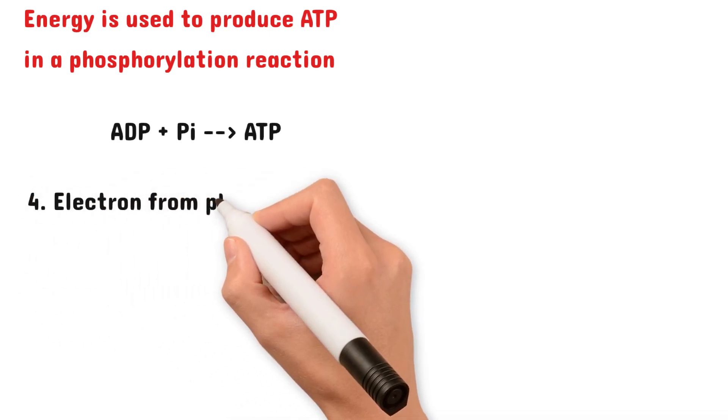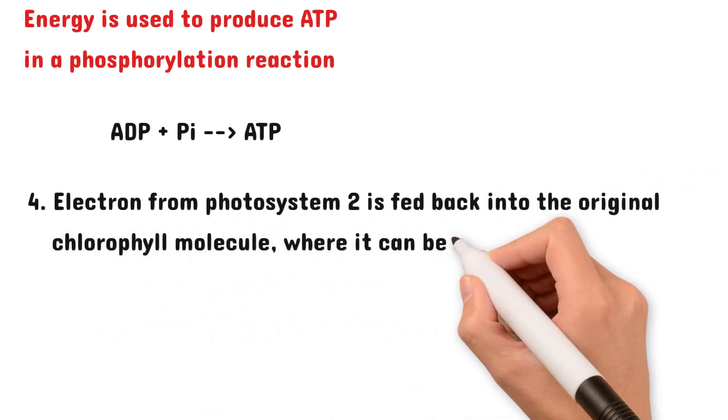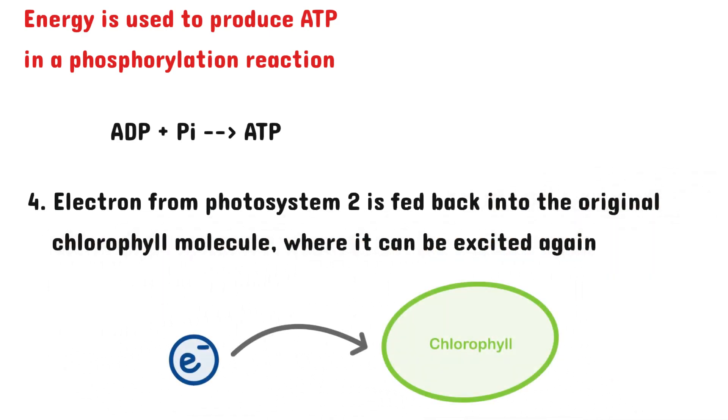The last step is that an electron from photosystem II is fed back into the original chlorophyll molecule, where it can be excited again. And this completes the cycle.